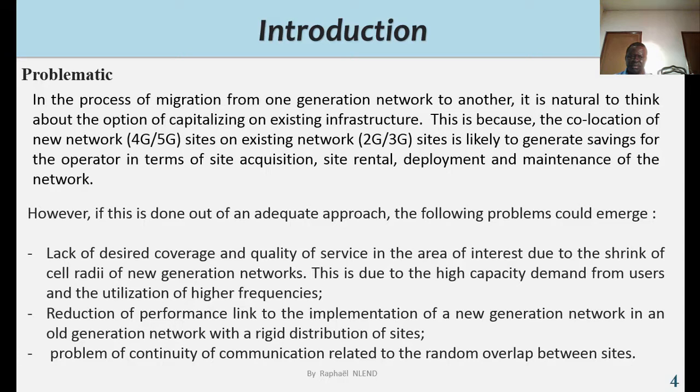However, if this is done out of an adequate approach, the following problems could emerge: lack of desired coverage and quality of service in the area of interest due to the shrink of cell radii of new generation networks, reduction of performance linked to the implementation of a new generation network in an old generation network with a rigid distribution of sites, and the problem of continuity of communication related to the random overlap between sites.